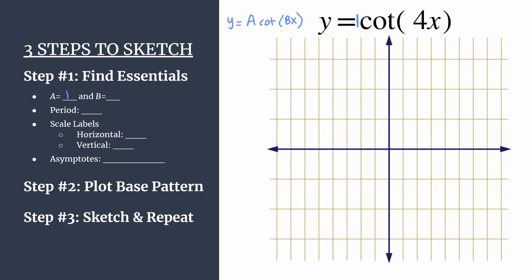So a is one, and that's going to help us find the y coordinates for some of our points in our base pattern. b is the coefficient of x. In this case it's a four. So that tells us something nice to keep a broad mindset. We should have four cycles happening between zero and pi, and we'll check that at the end of graphing.